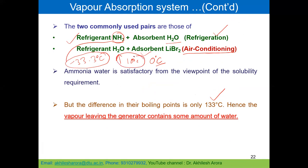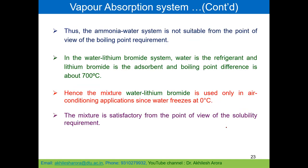Since the boiling point difference is only 133°C, vapor leaving the generator contains some amount of water. Water goes along with ammonia into the condenser and evaporator, and hence evaporation in the evaporator will not be isothermal — temperature will be low at the inlet and higher at the exit. Therefore, the ammonia-water system is not suitable from the boiling point requirement standpoint.